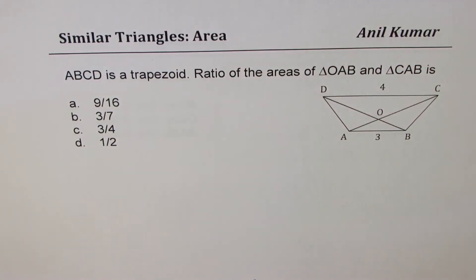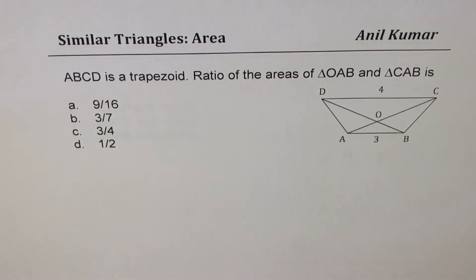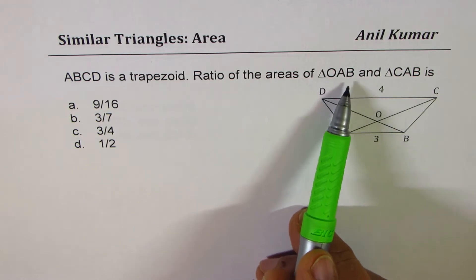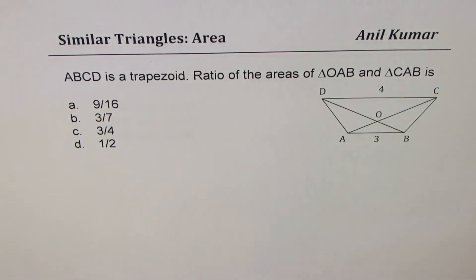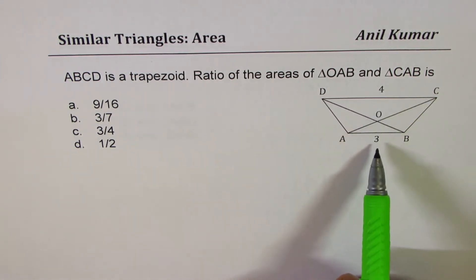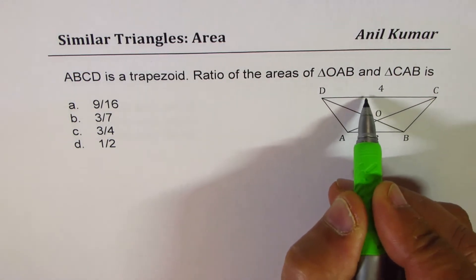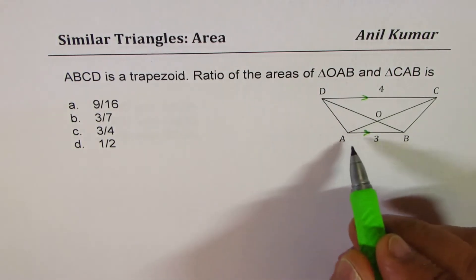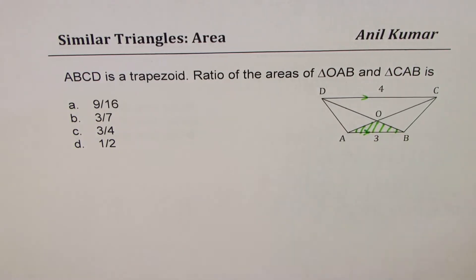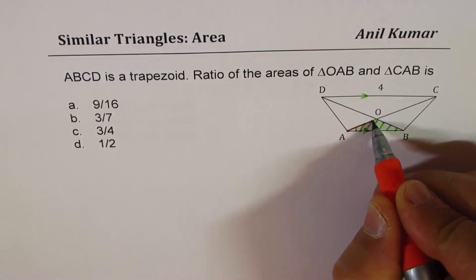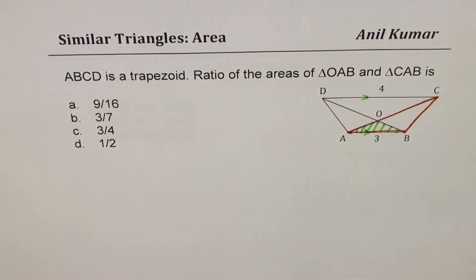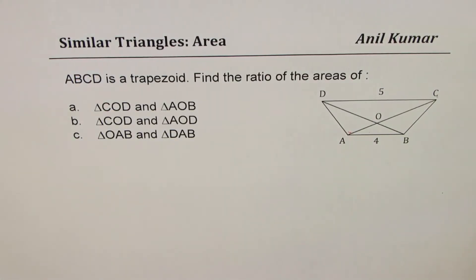I'm Adil Kumar sharing with you a test question on ratio of area of triangles. ABCD is a trapezoid, and the ratio of areas of triangle OAB and triangle CAB is to be found. The parallel sides are in the ratio of 4 to 3. You can pause the video, answer the question, and then look into my suggestions.